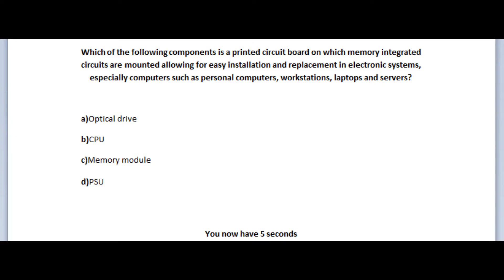Now let's jump to our sixth question. Which of the following components is a printed circuit board or PCB on which memory integrated circuits are mounted, allowing for easy installation and replacement in electronic systems, especially computers, such as personal computers, workstations, laptops, and servers? Remember guys, take your time and read the question carefully. Is it A, an optical drive? Is it B, a CPU? Is it C, a memory module? Or is it D, a PSU? You now have 5 seconds.